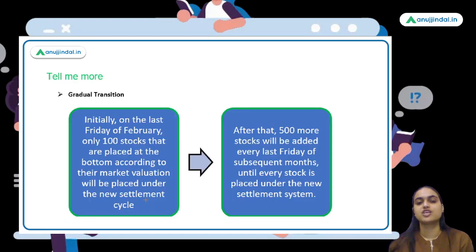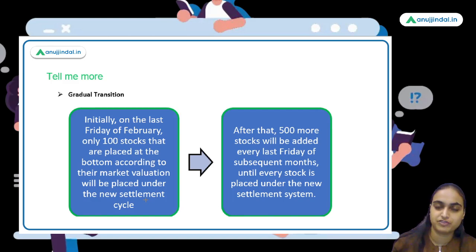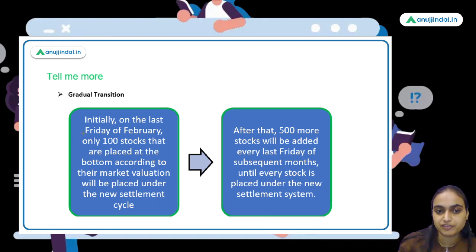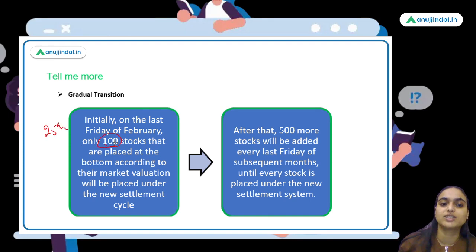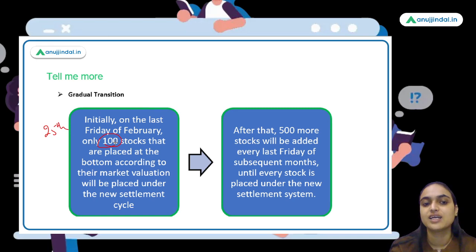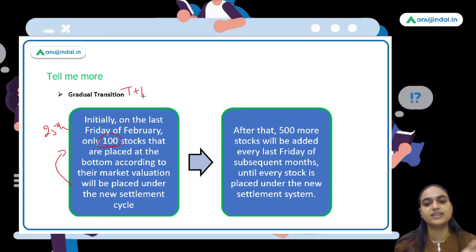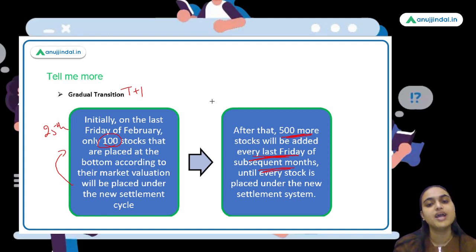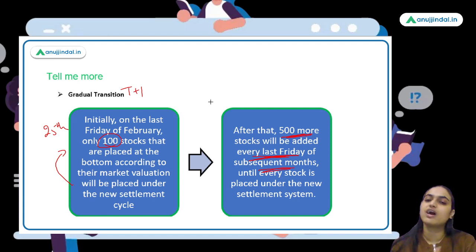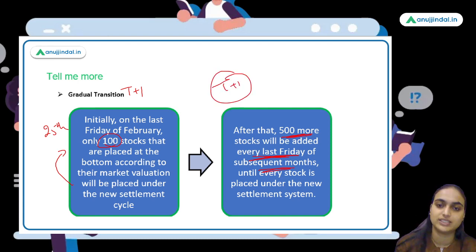This is not being implemented for all stocks at once on February 25th. It will be a gradual implementation. From February 25th, initially only 100 stocks — the lowest 100 based on market cap — will follow T+1 settlement. Then, every last Friday of subsequent months, 500 more stocks will be added until all stocks come under the T+1 cycle.